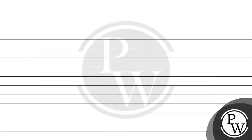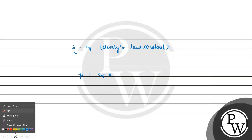So we write: P = Kh × solubility, where Kh denotes Henry's law constant. Basically, the partial pressure of the gas is equal to the product of Henry's law constant and the solubility.